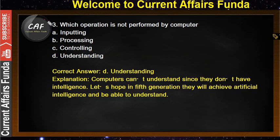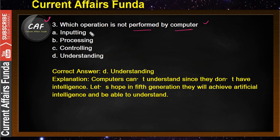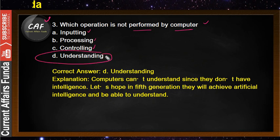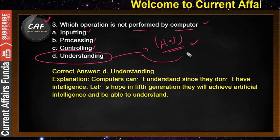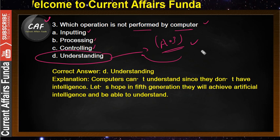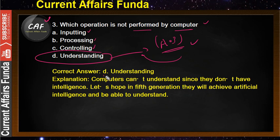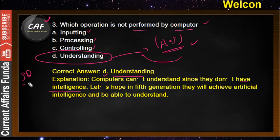Problem number 3: which operation is not performed by a computer? A computer performs inputting, processing, and controlling. Understanding is not possible for current computers — that will be possible in the fifth generation when artificial intelligence is added. The correct answer is 'understanding.' Computers cannot understand since they don't have intelligence; their IQ is zero.